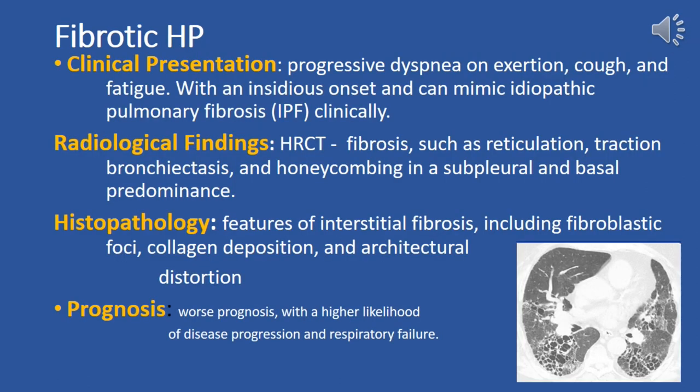Fibrotic hypersensitivity pneumonitis presents with a clinical presentation of progressive dyspnea on exertion, cough, and fatigue. It often has an insidious onset and can clinically resemble idiopathic pulmonary fibrosis, IPF. Radiological findings on high-resolution computed tomography, HRCT, typically show evidence of fibrosis, such as reticulation, traction bronchiectasis, and honeycombing with a subpleural and basal predominance.